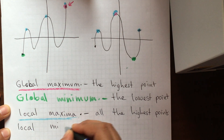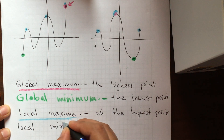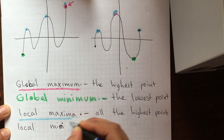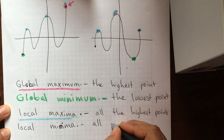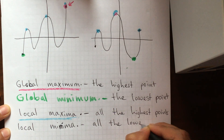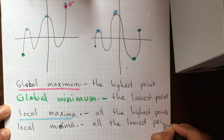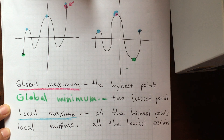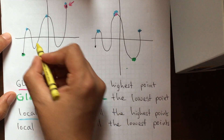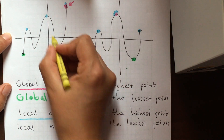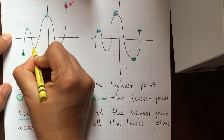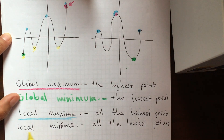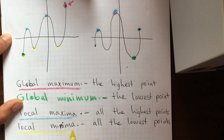If we're talking about local minima, that refers to all the lowest points. This is lower than other points, this is lower than other points, and this is lower — I'm using yellow to mark them.